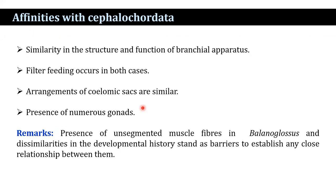Regarding affinities with Cephalochordata: similarities include structure and function of the branchial apparatus, filter feeding in both, similar arrangement of coelomic sacs, and presence of numerous gonads. Dissimilarities include the presence of unsegmented muscle fibers in Balanoglossus, and differences in developmental history, which stand as a barrier to establishing any close relationship between them.